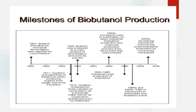Looking at the milestones of biobutanol production: in 1861, butanol production was first achieved by fermentation. Then in 1911, the isolation and patenting of the microbial strain capable of producing butanol occurred, using potato starch as a substrate.